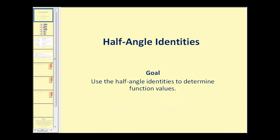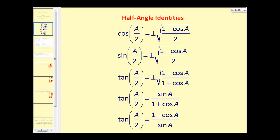Welcome to a video on half angle identities. The goal of this video is to use half angle identities to determine function values. Here we see all of the half angle identities. Notice a lot of these seem very similar, so be very careful when you copy them down. Notice that the first three have a plus or minus sign on them. What this tells us is that we have to determine whether the function value will be positive or negative based upon the quadrant of angle A over two.